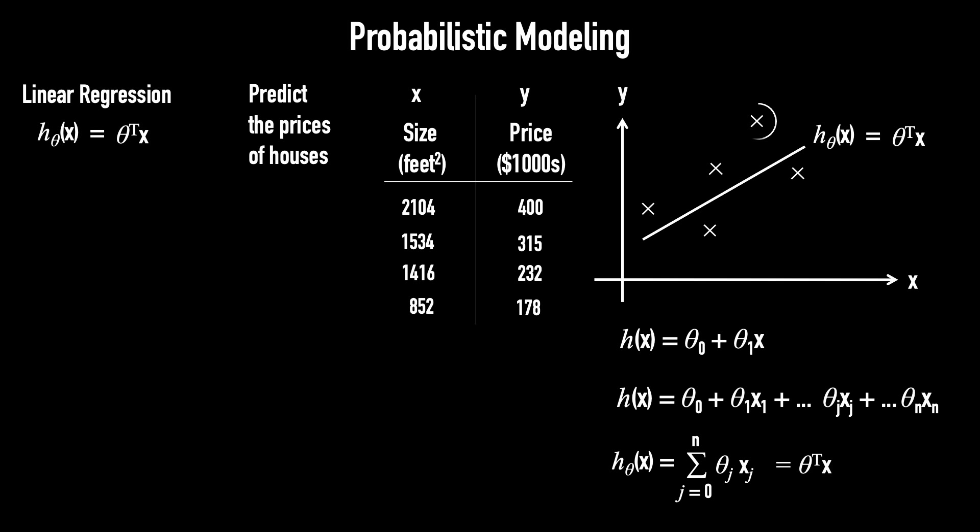Let's look at this house. This is the predicted price, θᵀx, and this is the actual price, y. The difference between them, denoted by epsilon, is called the error. So, we can express the actual price as the predicted price plus the error, y = θᵀx + ε.